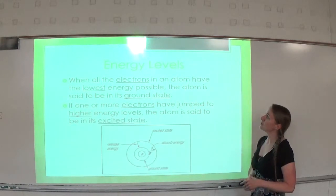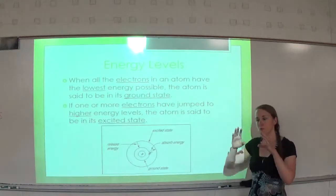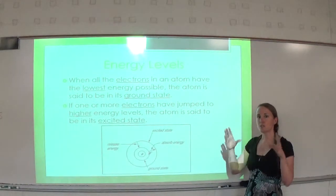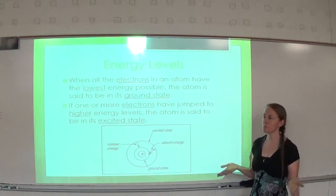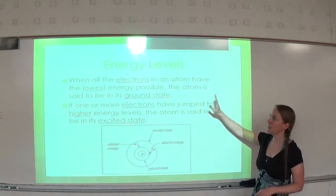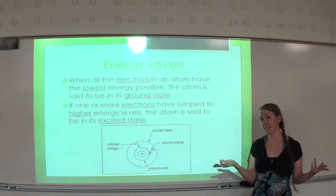When all the electrons in the atom have the lowest energy possible, the atom is said to be in ground state. When we add just the right amount of electrons to each energy level and none have gained energy and jumped up, it's referred to as ground state. If one or more electrons have jumped to higher energy levels, it's referred to as being an excited state.